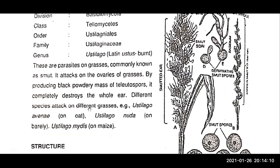Different species attack on different grasses: Ustilago avenae, Ustilago nuda, and Ustilago maydis. Ustilago avenae is the loose smut of oats; Ustilago nuda is the loose smut of barley; and Ustilago maydis affects wheat, maize, and various grasses, producing characteristic black dusty structures called bunt structures.